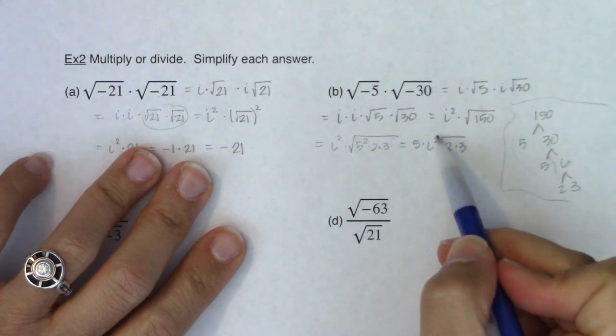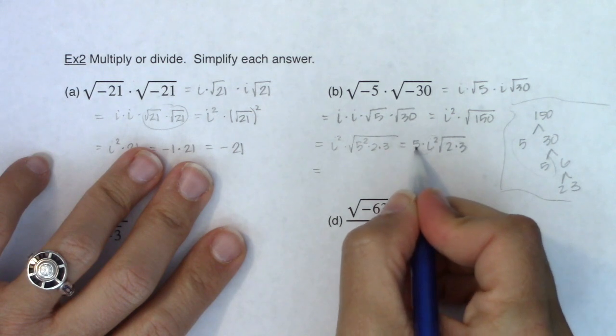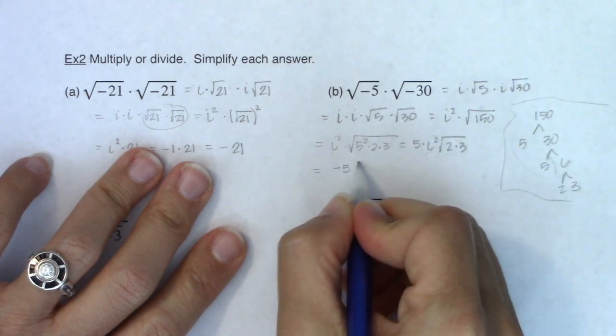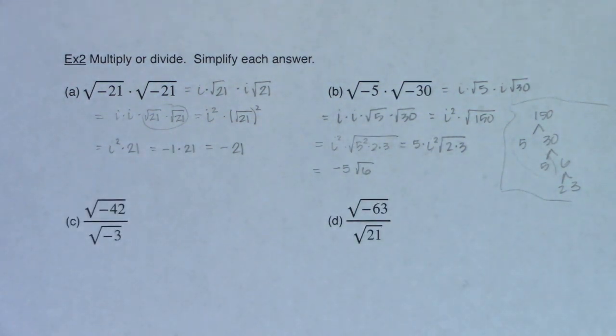So I have 5 times i squared times the square root of 2 times 3. So let's simplify this a bit. I know this is negative 1 and I know this is 6. So this becomes 5 times negative 1. I've got negative 5 on the outside of the radical and I have the square root of 6 still left in the radical.